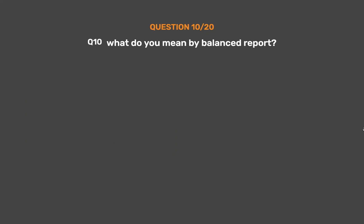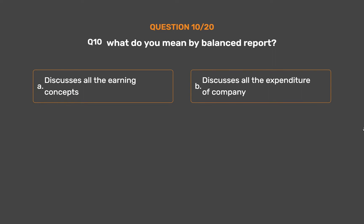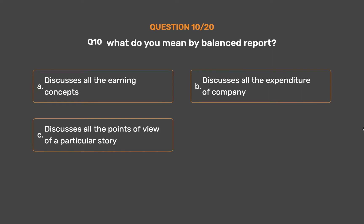Question number 10. What do you mean by balanced report? Option A: Discusses all the earning concepts. Option B: Discusses all the expenditure of a company. Option C: Discusses all the points of view of a particular story. Option D: None of these.